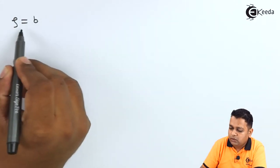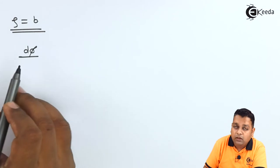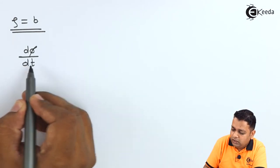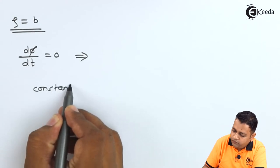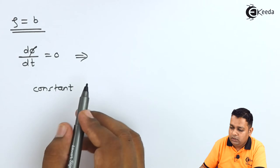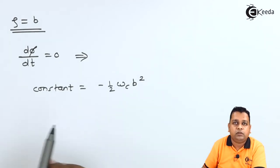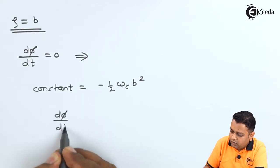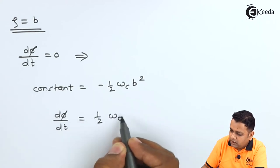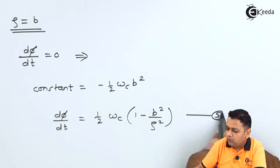We apply the boundary condition that at the cathode electrode, ρ = b (the radius of the cathode). At the cathode, the electron is just formed and is at static condition, so the angular velocity dφ/dt = 0. Substituting into equation 4 gives the constant as −(1/2)·ωc·b². Therefore equation 5 becomes: dφ/dt = (1/2)·ωc·[1 − b²/ρ²].